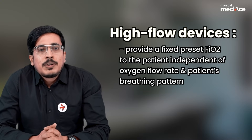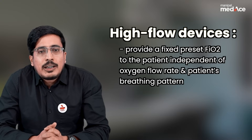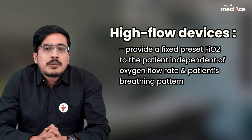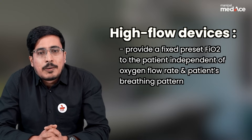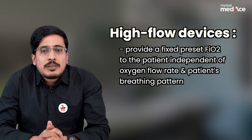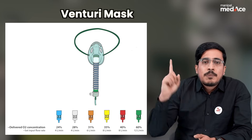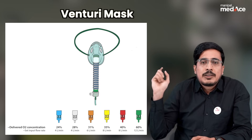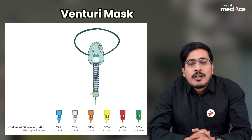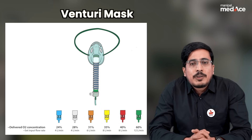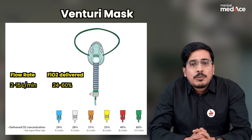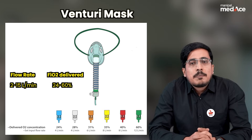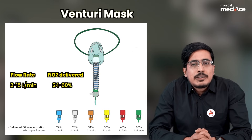The first high flow device is the Venturi mask. A fixed flow rate of 2 to 15 liters per minute is achieved, and the maximum FiO2 delivered is 60 percent.